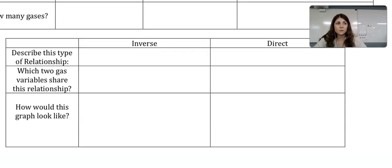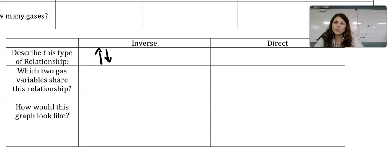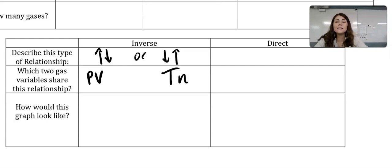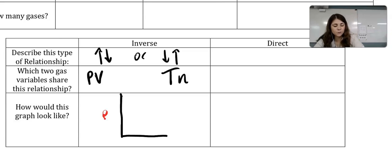Let's fill out this chart and talk about the inverse and direct relationships of our gas variables. Inverse means that if one goes up, the other goes down, or vice versa. The two gas variables that share this relationship are pressure and volume. So if you increase the volume, you decrease the pressure. A graph of the pressure-volume inverse relationship would look like an exponential decay.